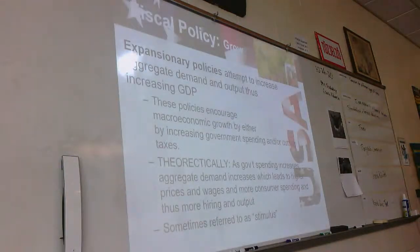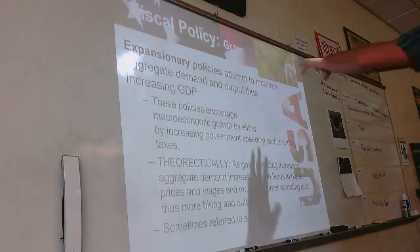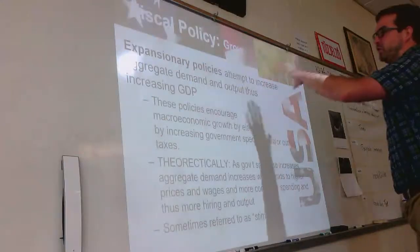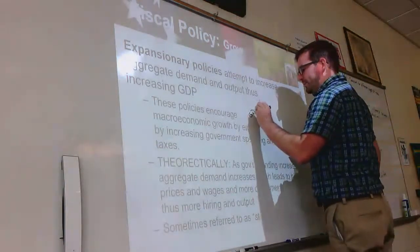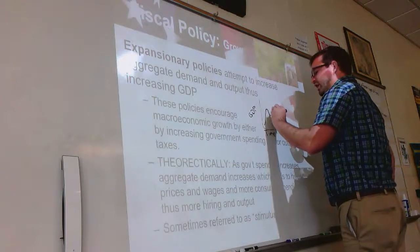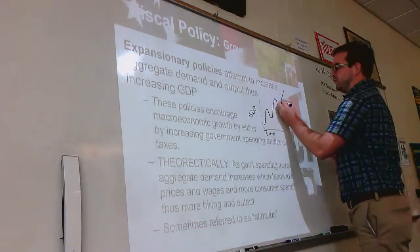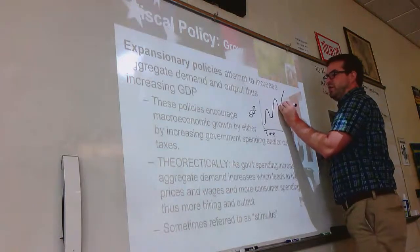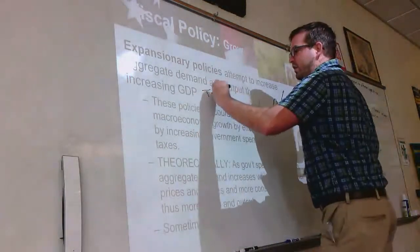Now let's look at how the federal government uses fiscal policy. Fiscal policy is the manipulation of taxes and government spending in order to help our economy grow or to slow it down. Looking at expansionary policy, the goal of the federal government is to make our economy expand. Thinking back to the business cycle — GDP over time — our economy expands, hits the peak, then contracts. Right now the goal is to stop this contraction and get our economy growing again. The two big tools they have are taxes and government spending.